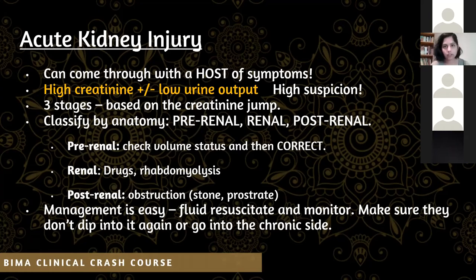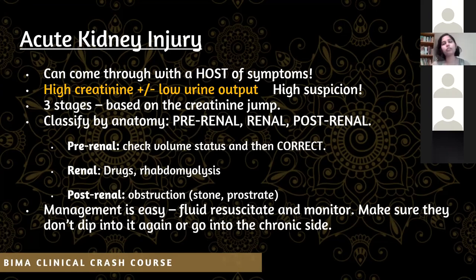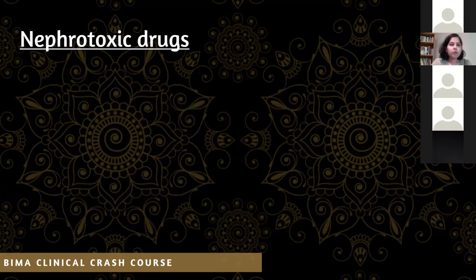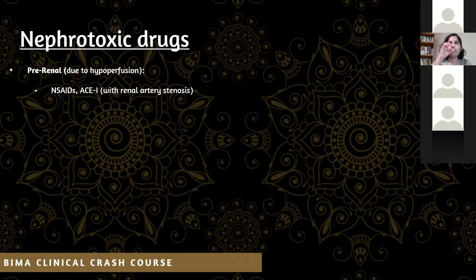There are nephrotoxic drugs that can cause AKI in all three stages. In pre-renal, worry about NSAIDs — ibuprofen, diclofenac — and ACE inhibitors. ACE inhibitors are tricky: stop them in an AKI setting, but they actually help in chronic kidney disease. Be especially cautious in patients with bilateral renal artery stenosis — giving an ACE inhibitor will constrict further and cause hypoperfusion. Stop in the acute setting and restart at discharge.